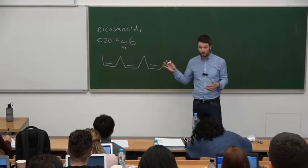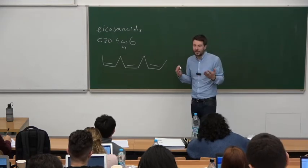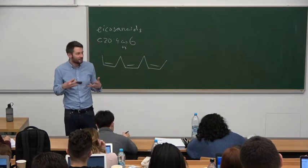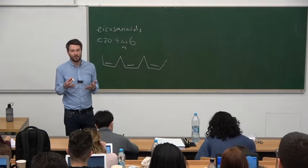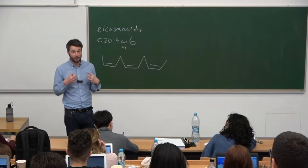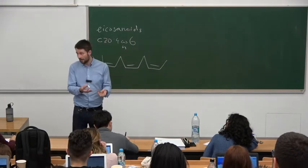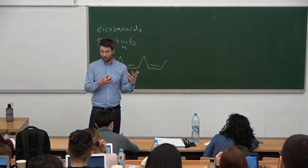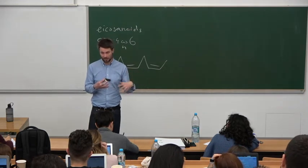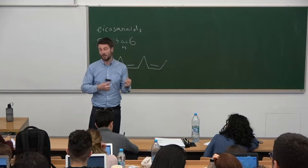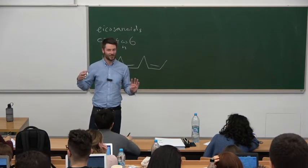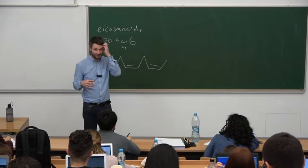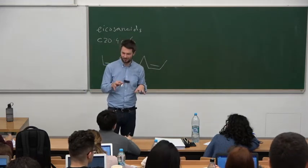For arachidonic acid, C20 omega-6, the actual double bond positions are delta-5, delta-8, delta-11, delta-14 — counting from the carboxyl end. Delta-9 is the longest desaturase we have. The usual final product of fatty acid synthesis is palmitic acid — 16 carbons. If we take palmitic acid and use delta-9 desaturase, making a double bond at delta-9, the resulting acid is called palmitoleic acid.